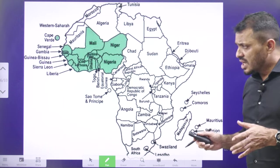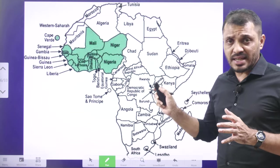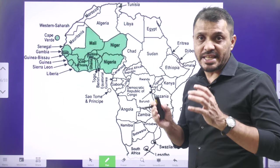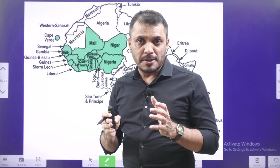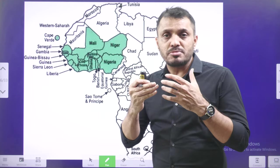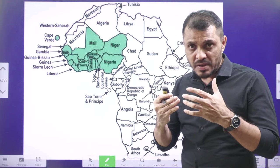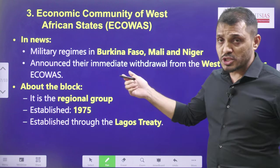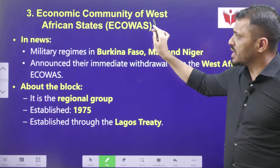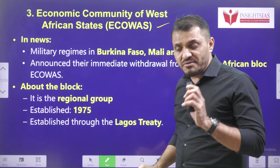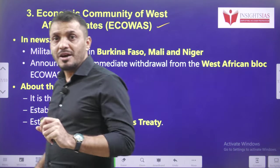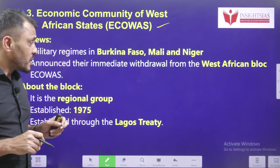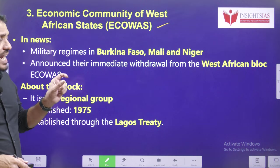Topic three: we are going to discuss about the group of West African countries. The purpose of this group is greater economic integration, having a common currency, and cooperation between these countries regarding trade and commerce. This group's name is the Economic Community of West African States (ECOWAS). We are discussing this because a few countries — Burkina Faso, Mali, and Niger — decided to exit from this grouping.